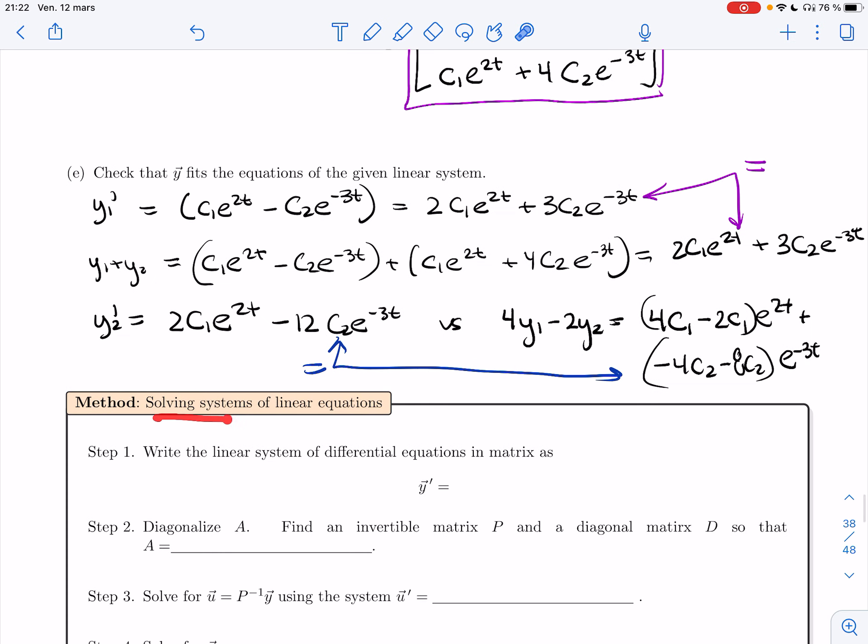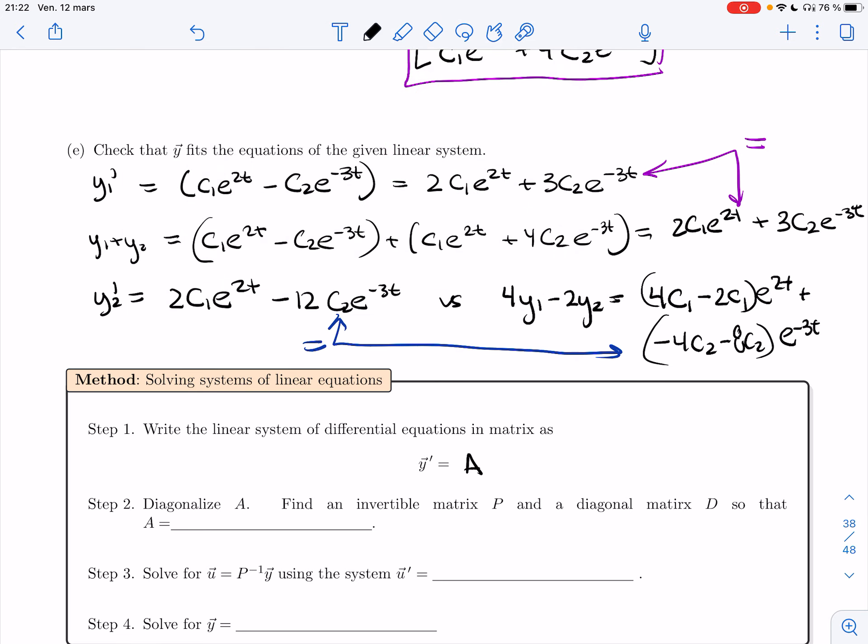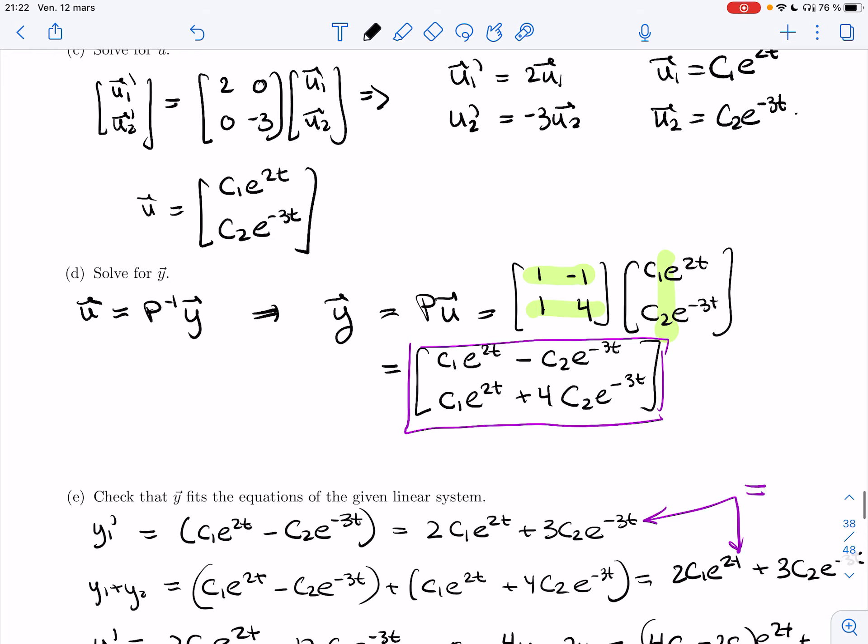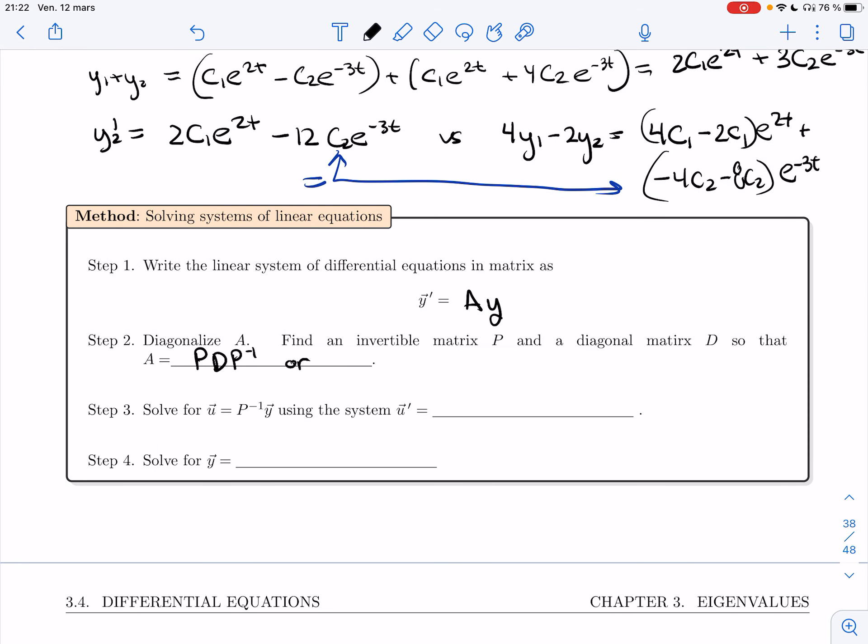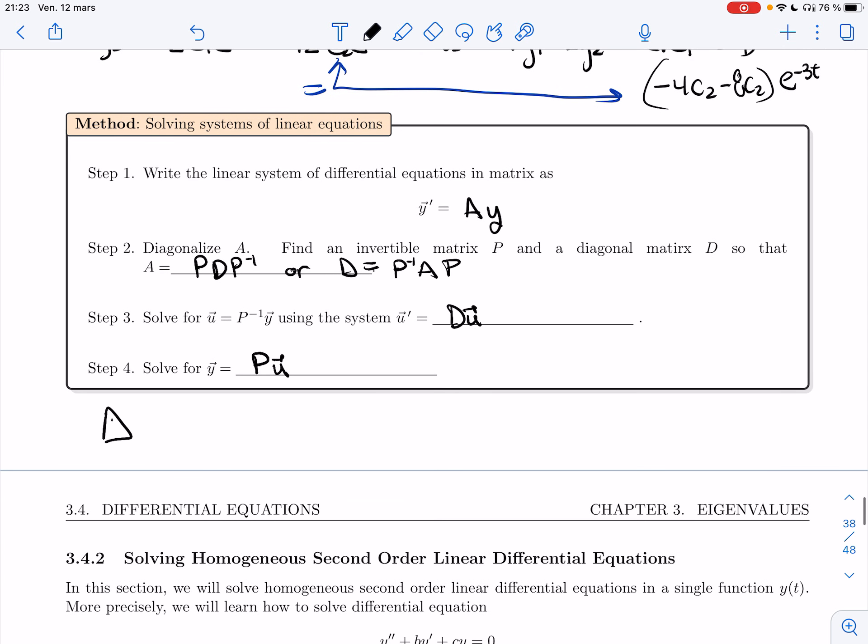All right. So let's recap this method for solving a linear system of differential equations. I write the linear system of differential equations in matrix form as y prime equals Ay. And then I'm going to diagonalize A. I want to find an invertible matrix P and a diagonal matrix D so that A is PDP inverse, or D is P inverse AP. And I solve for u using the linear system, u prime is Du. And so that's going to use the proposition. And then I solve for y, so y is Pu. Just a note. This is going to be more important if you have a bigger system, but you don't need P inverse, right? You sort of need it here, but you never use it. You can solve for u without it. And here you only use P. And so all you need is P and D. You don't actually need P inverse.